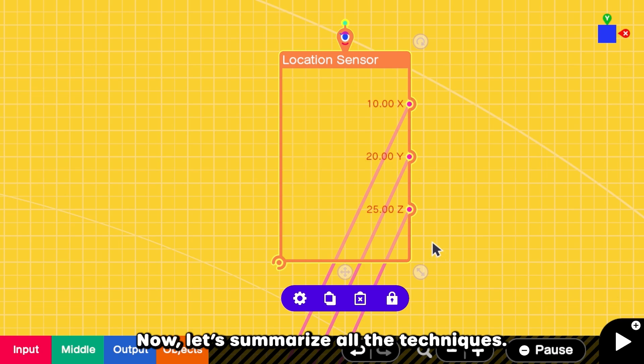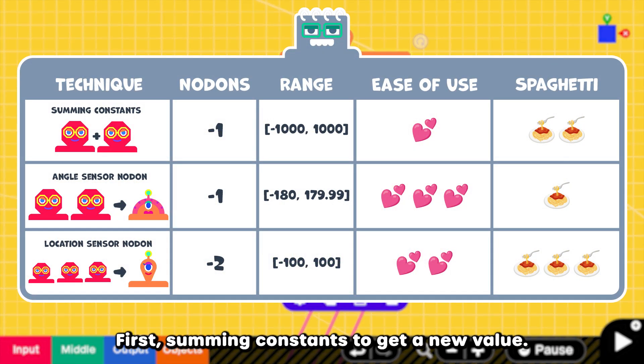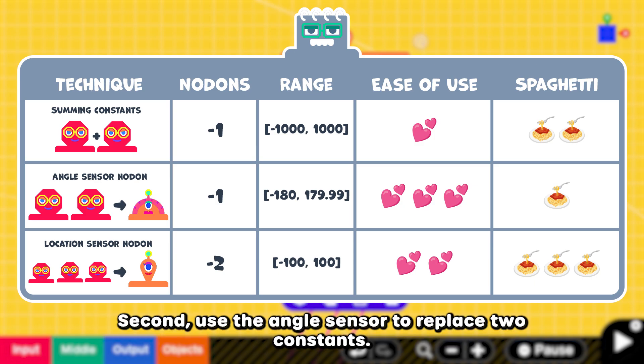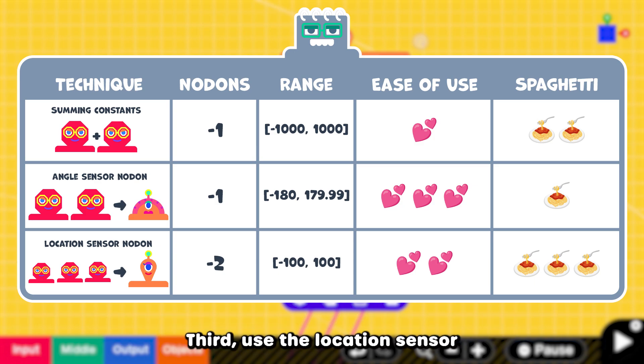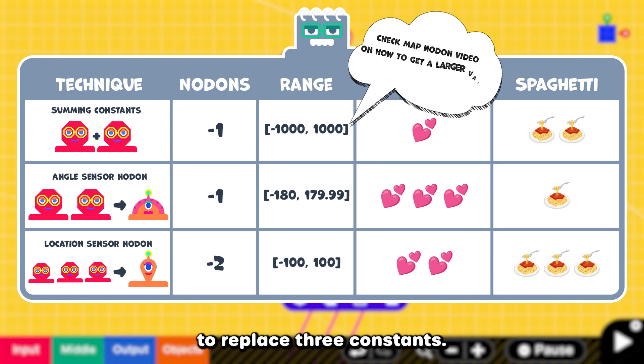Now, let's summarize all the techniques. First, summing constants to get a new value. Second, use the angle sensor nodon to replace two constants. Third, use the location sensor to replace three constants.